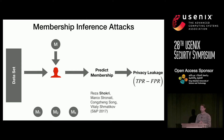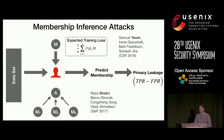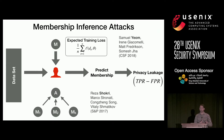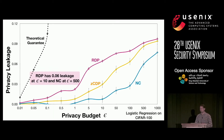We evaluate privacy leakage by considering an adversary performing membership inference attacks. The first attack is that of Shokri et al., where shadow models are trained and then an attack model is trained on them to predict whether a particular record was a member. The second attack is that of Yeom et al., where the attacker has access to the model and also knows auxiliary information such as the expected training loss of the targeted model. Privacy leakage is calculated as the difference between the true positive rate and false positive rate of the adversary performing the membership inference attacks.